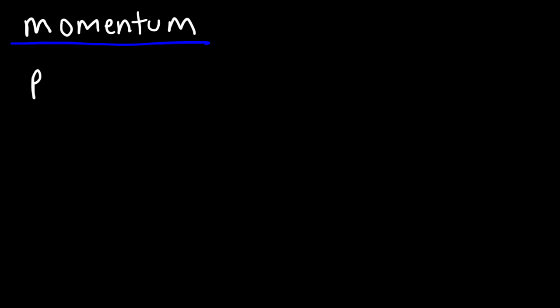In this video, we're going to talk about impulse and momentum. But let's begin our discussion with momentum. What is momentum? Here's the formula for momentum. Momentum, represented by the lowercase p symbol, is mass times velocity. Momentum is basically mass in motion.